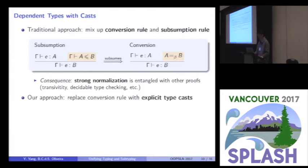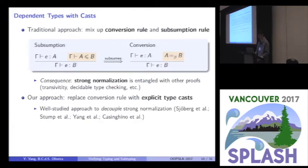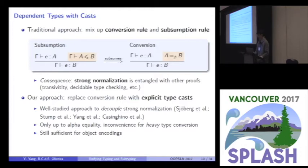So, we took another approach to replace conversion rule with so-called explicit type casts. This is a well-studied approach to decouple strong normalizations by several previous studies. The trade-off is that the system is not only up to alpha equality, it is somehow inconvenient for heavy type conversion. But we think it is still sufficient for our purpose to do the object encodings.